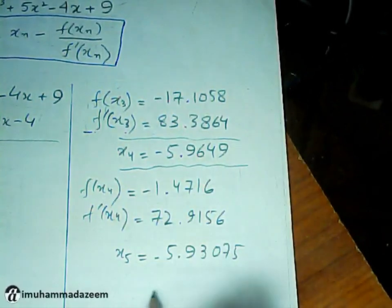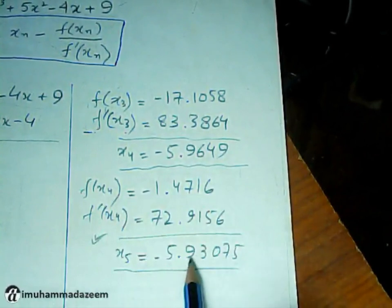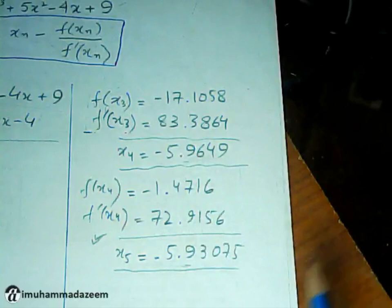Here we can say that the answer is starting to converge. 5.9, there is one decimal place converged. But still we have to find up to three decimal places.